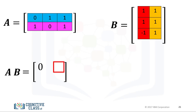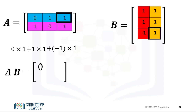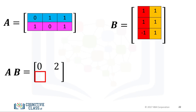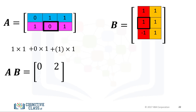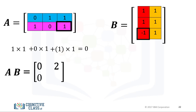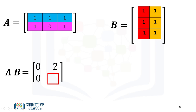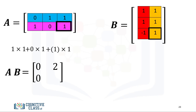For the first row and the second column of the new matrix, we take the dot product of the first row of matrix A with the second column of matrix B. The result is 2. For the second row and the first column, we take the dot product of the second row of matrix A with the first column of matrix B. The result is zero. Finally, for the second row and second column of the new matrix, we take the dot product of the second row of matrix A with the second column of matrix B. The result is 2.